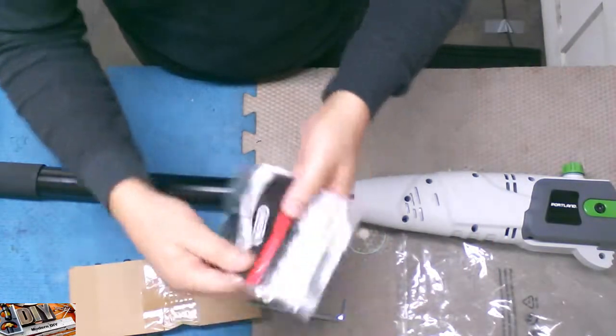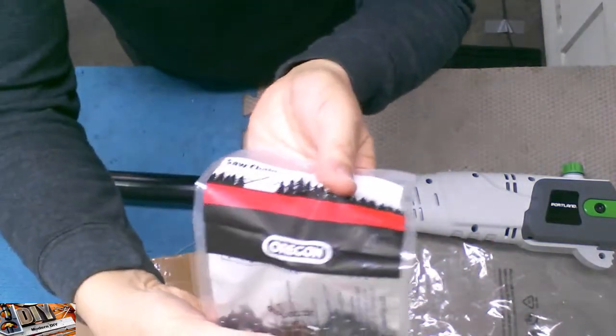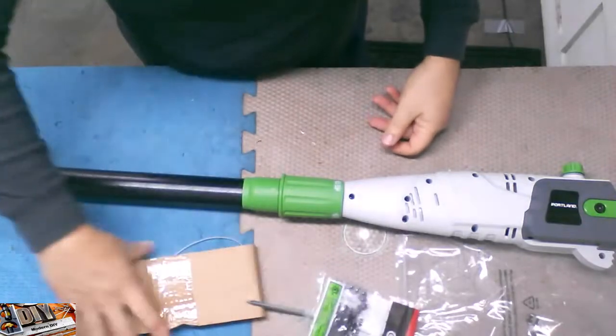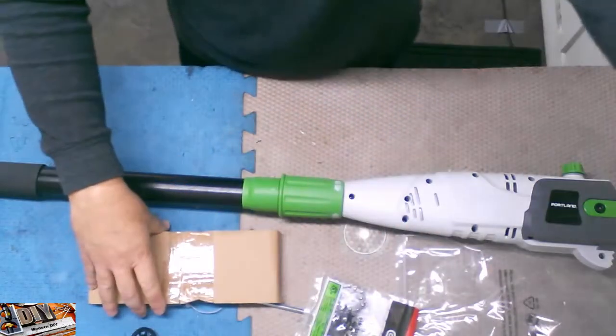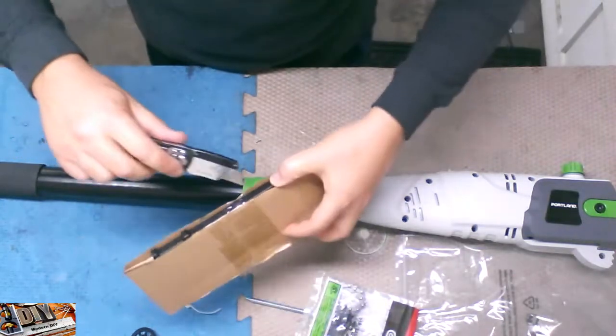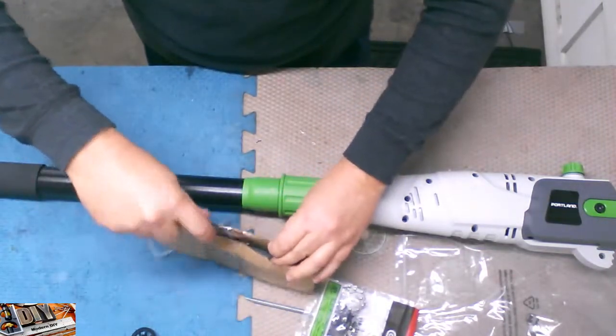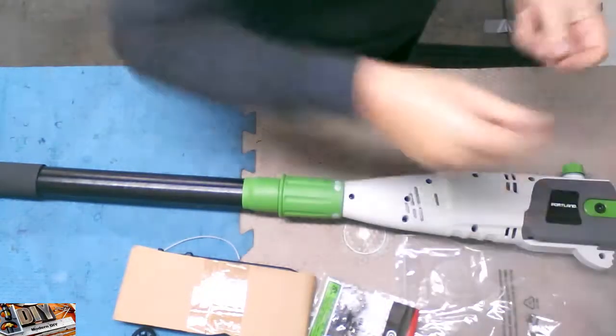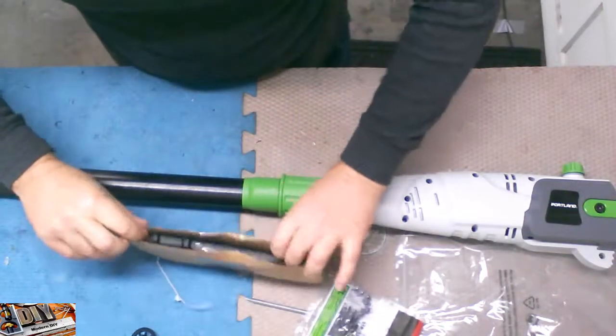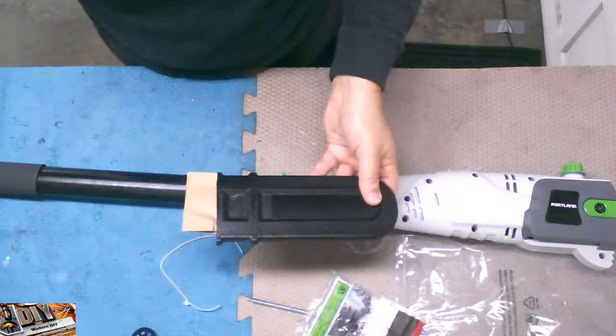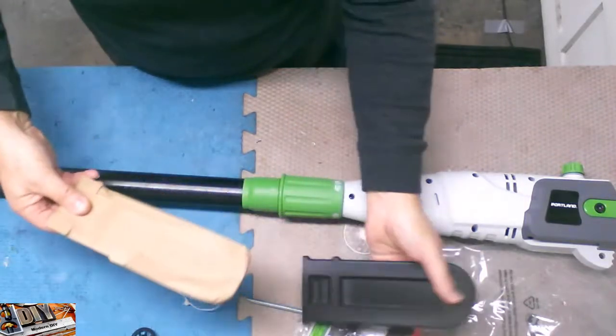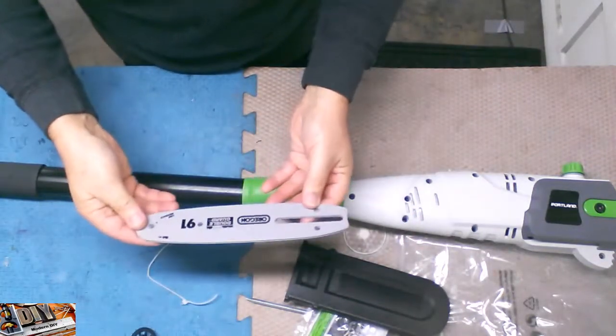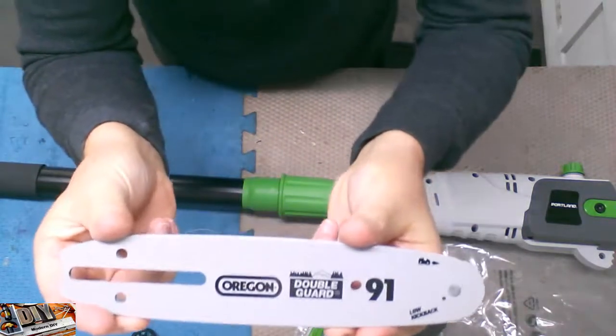And then we have the chain in this own little packet. Oh, by the way, I didn't mention it's an Oregon bar. Well, Oregon, however you want to say it. So that's what this is. Let me undo this part. So here we have the bar. And it's nicely protected so you don't hurt yourself. Open this up. And there we go. So here's the Oregon bar.